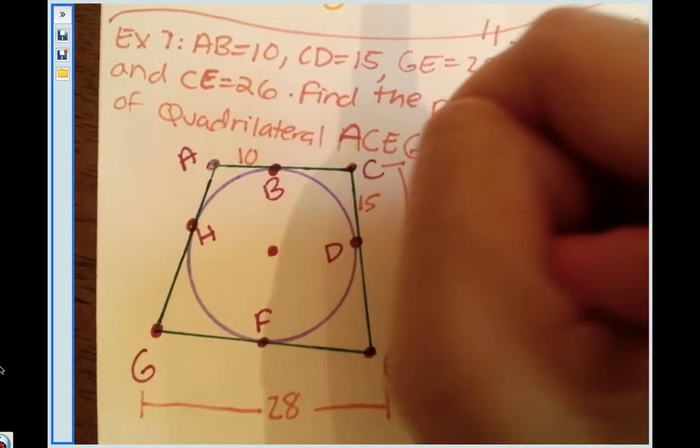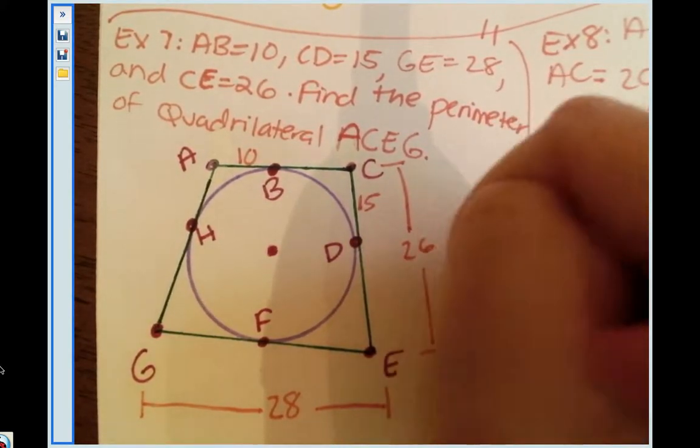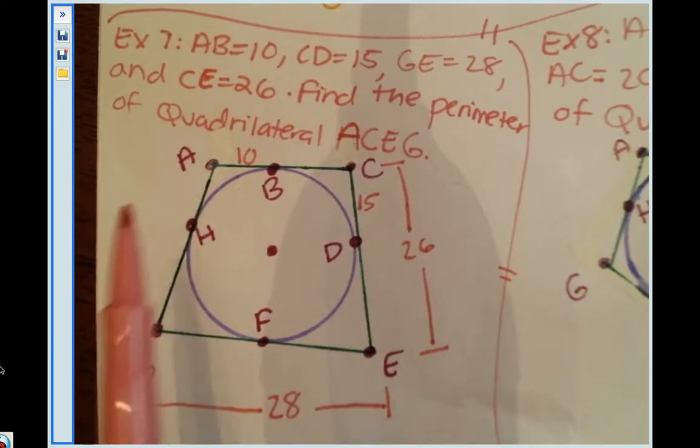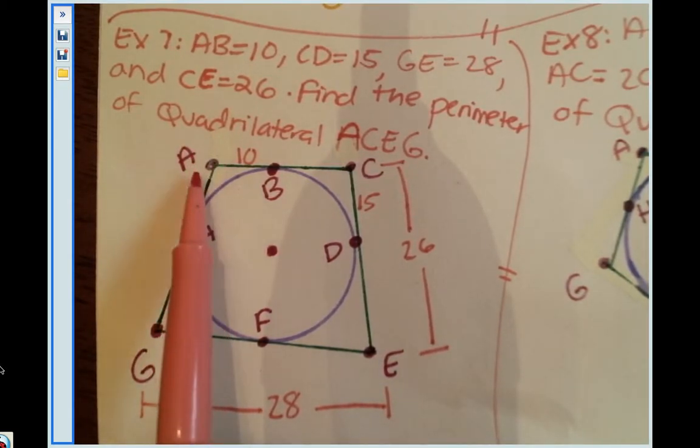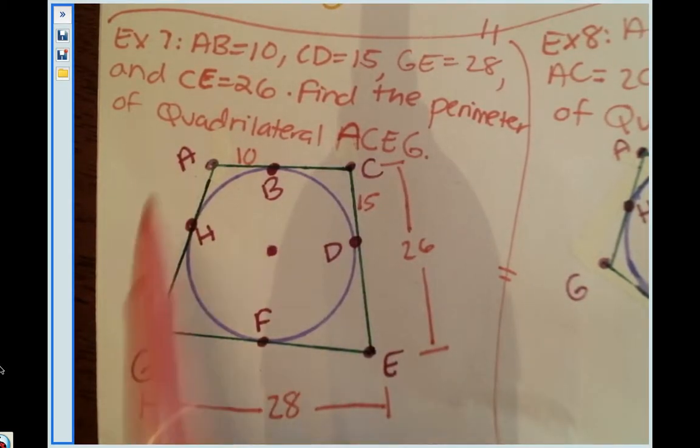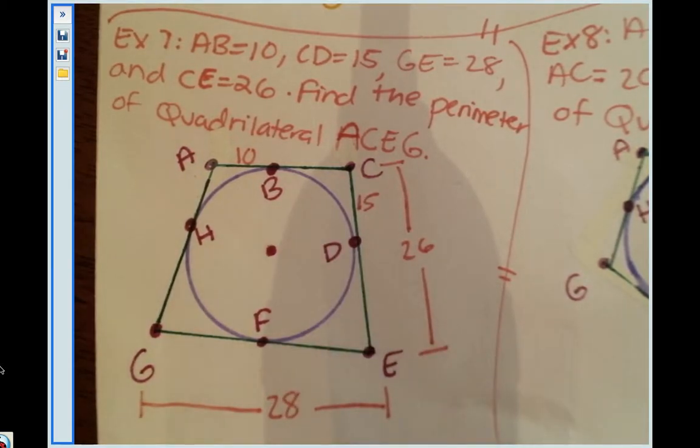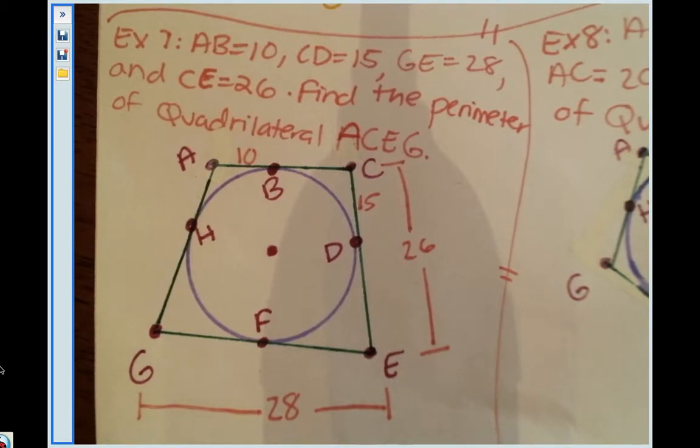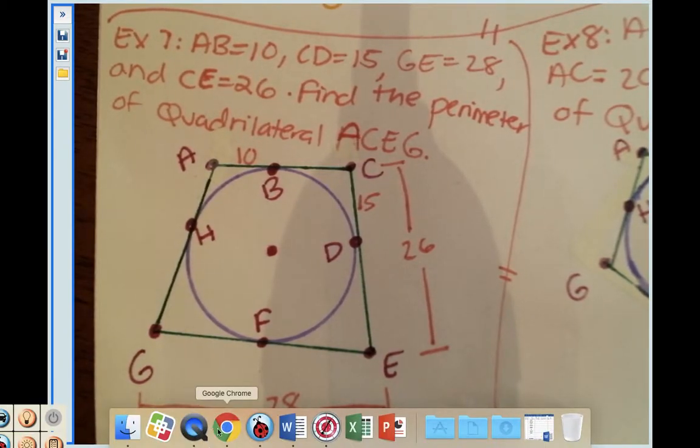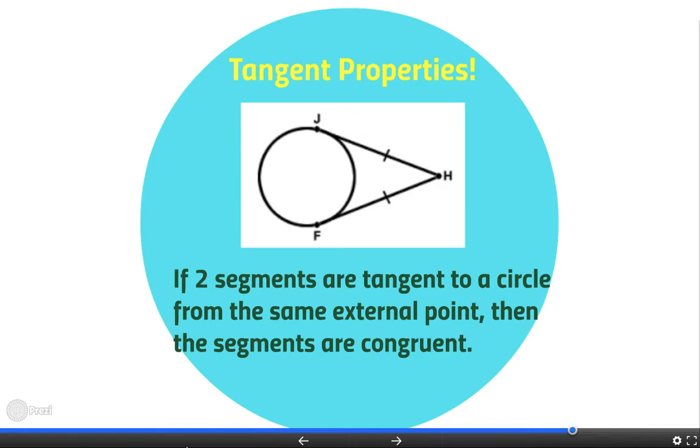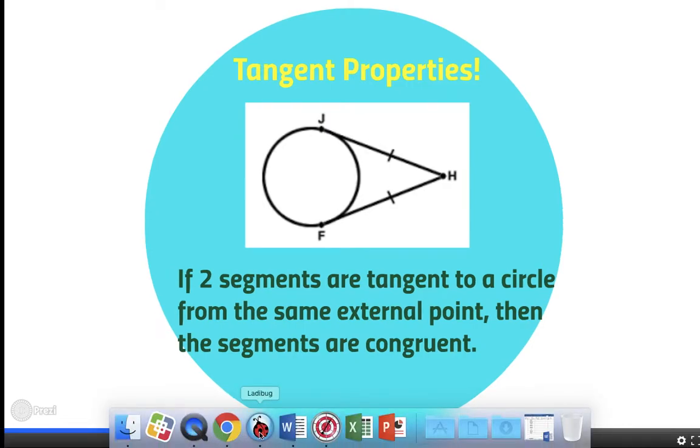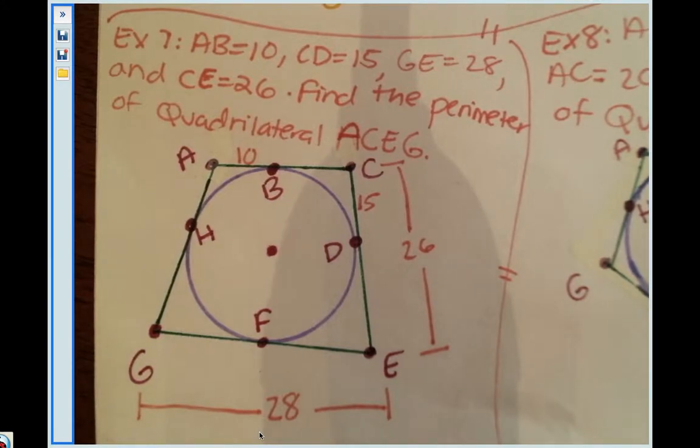It says to find the perimeter of quadrilateral ACEG. So I want to find the perimeter, which means I want to add up all the side lengths together. Looking at this problem you're like, Miss Long, what does this have anything to do with this property that you just talked about? Well it's hard to see, but if you guys look closer at the problem there's a bunch of tangent segments that intersect in the same external point.